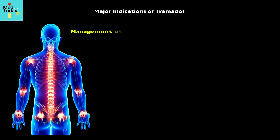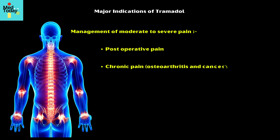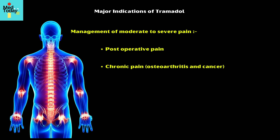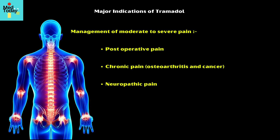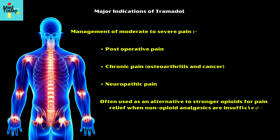Major indications of tramadol include the management of moderate to severe pain, including postoperative pain, chronic pain associated with various conditions such as osteoarthritis and cancer, and for relieving neuropathic pain. In addition, it is often used as an alternative to stronger opioids for pain relief when non-opioid analgesics are insufficient.